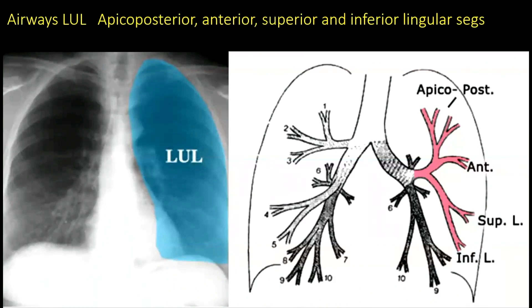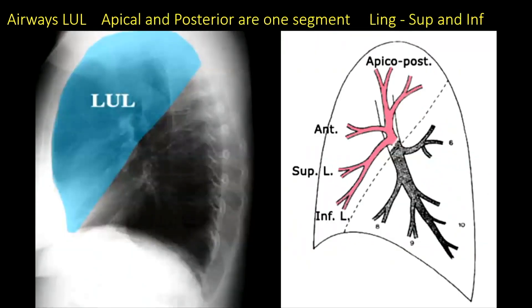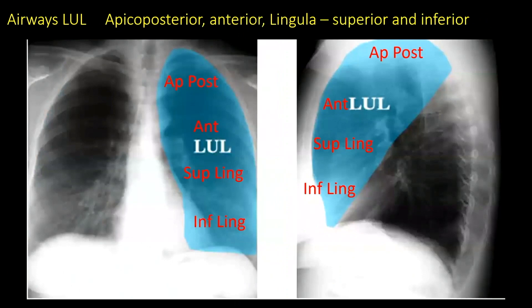The left upper lobe is different. The apical posterior bronchus is one segment instead of being a separate apical and posterior. Then there's the anterior, superior, and inferior lingular segments. On the lateral view, you can see the apical posterior, the anterior touching the back of the sternum, then the superior lingular and then the inferior lingular segment. They're fairly well differentiated on either the PA or the lateral film. The superior lingular touches the upper left heart border and the inferior lingular touches the lower left heart border.